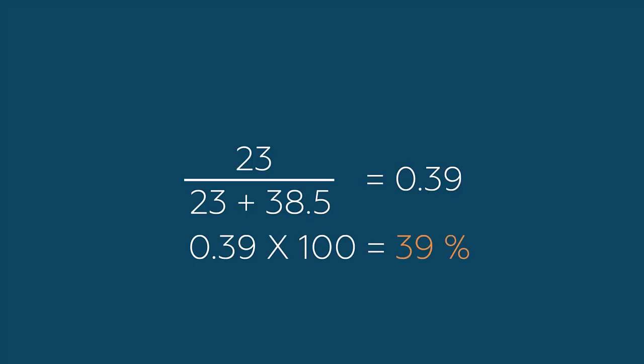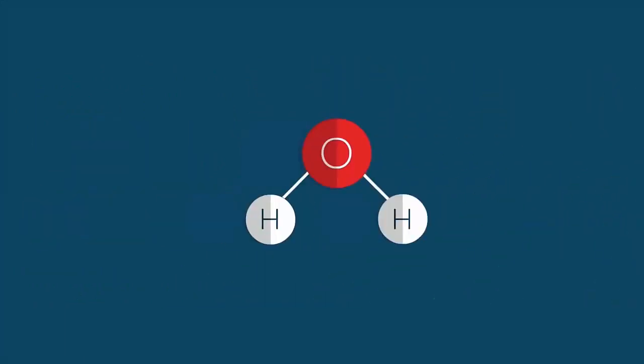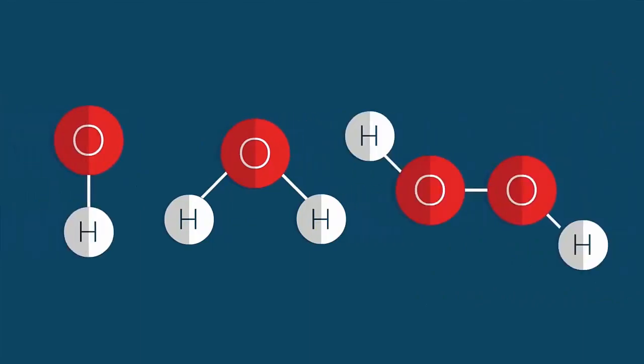The law of constant composition is a useful tool for defining compounds, but it has its limits. Some compounds are non-stoichiometric, and their elemental composition varies between samples. These compounds have similar ratios of the same kinds of elements, but not exactly the same ratios.